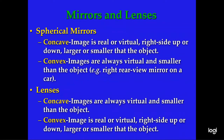Now, lenses — we're going to focus on two types of lenses: the concave lens and the convex lens. The concave lens always produces an image that is virtual and smaller than the object. A convex lens can produce an image that is real or virtual, right side up or upside down, and larger or smaller than the object. Importantly, the concave mirror behaves like the convex lens, and the convex mirror behaves like the concave lens.